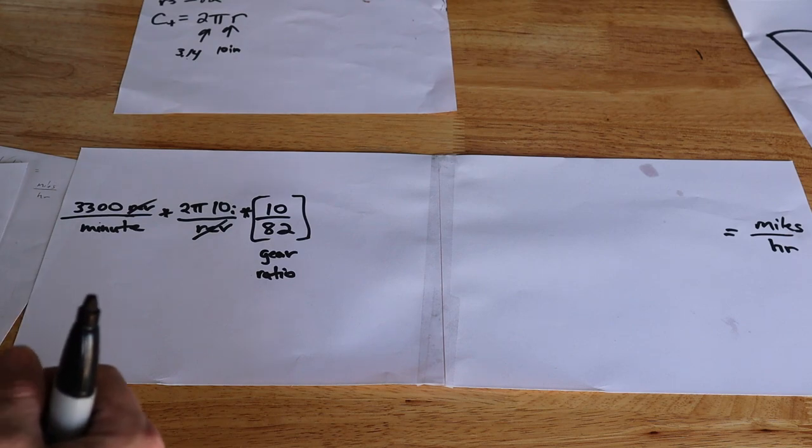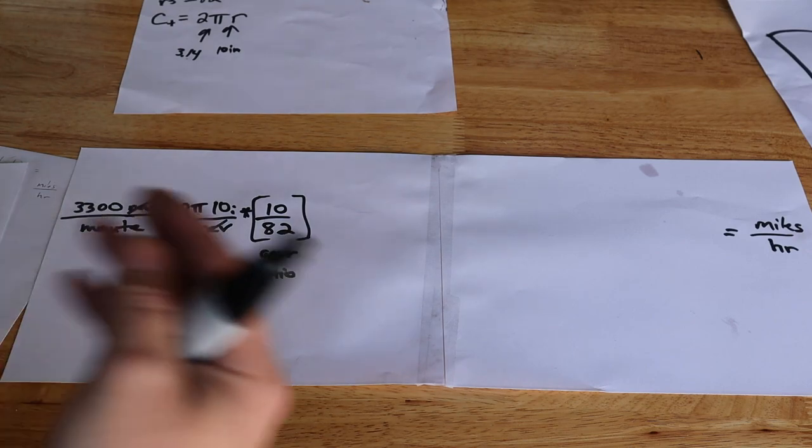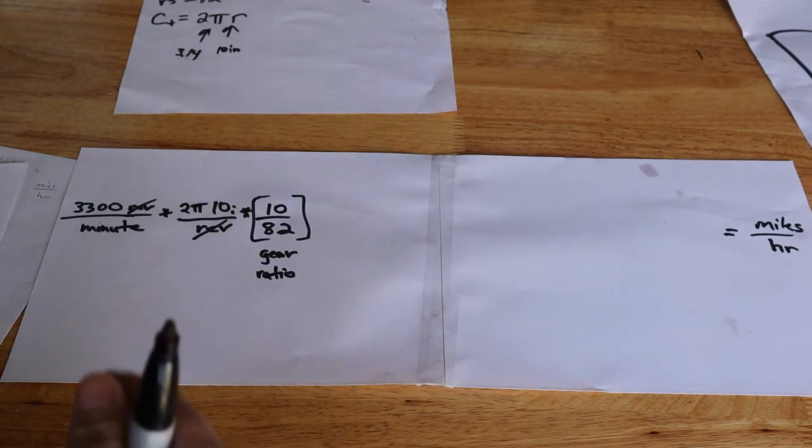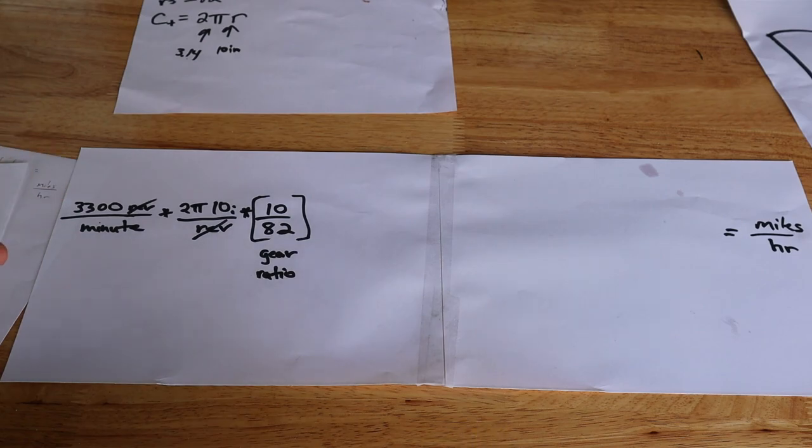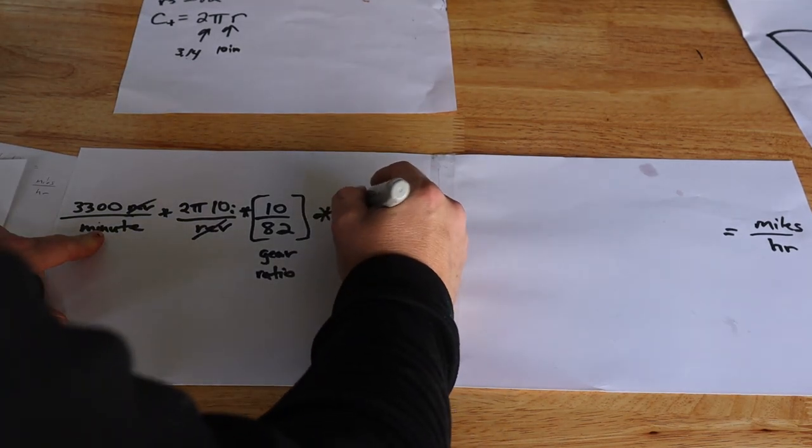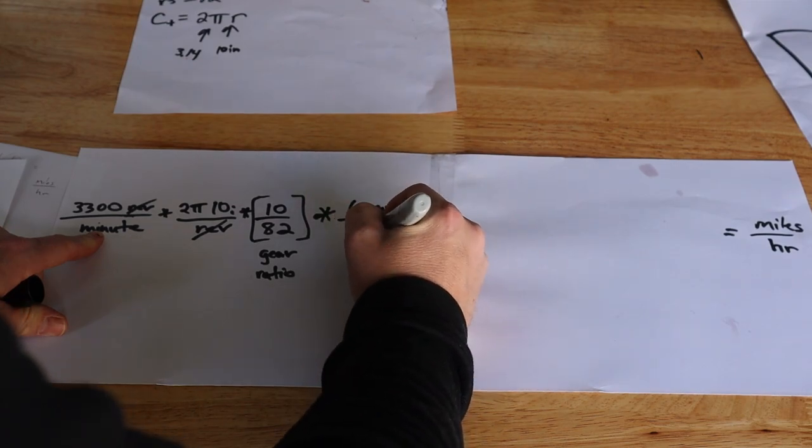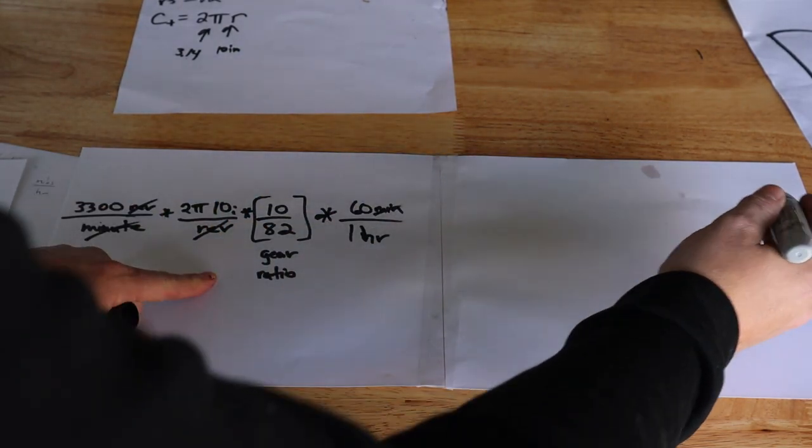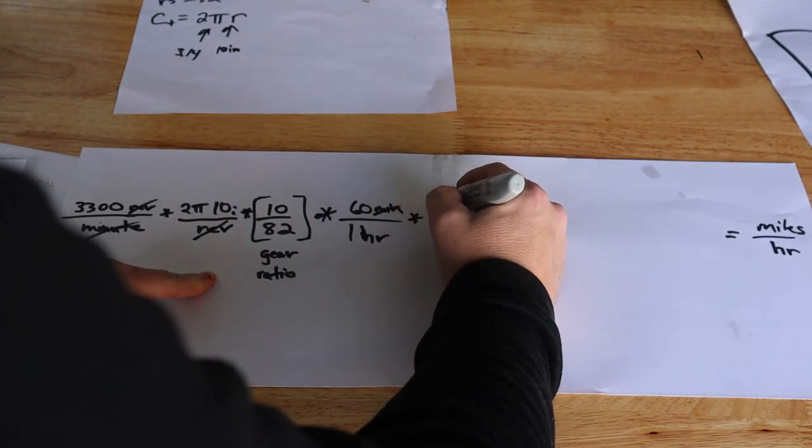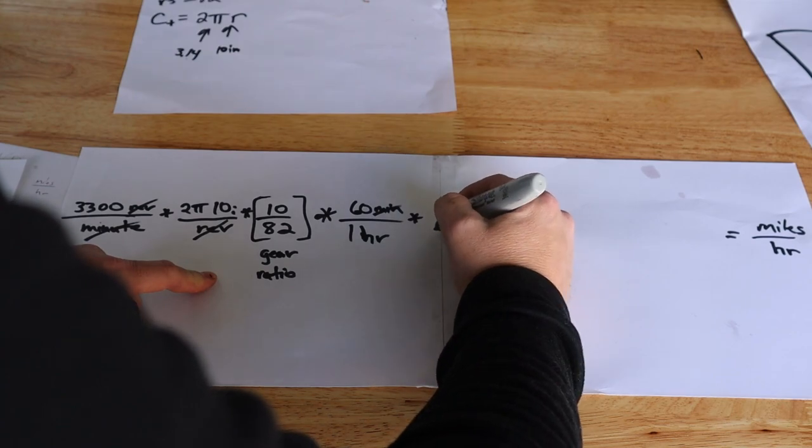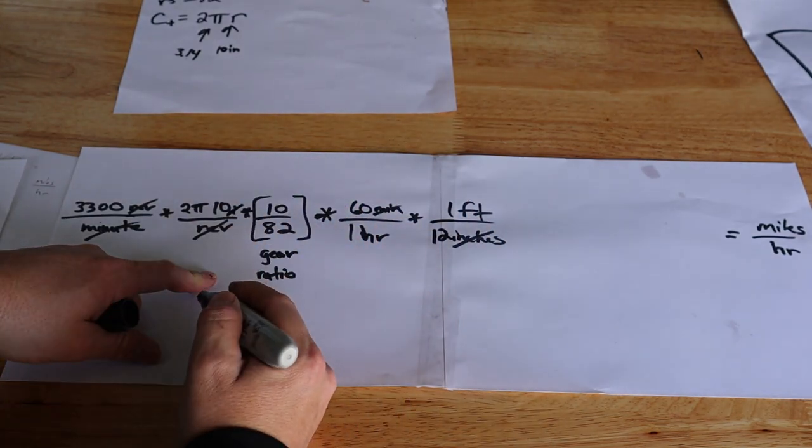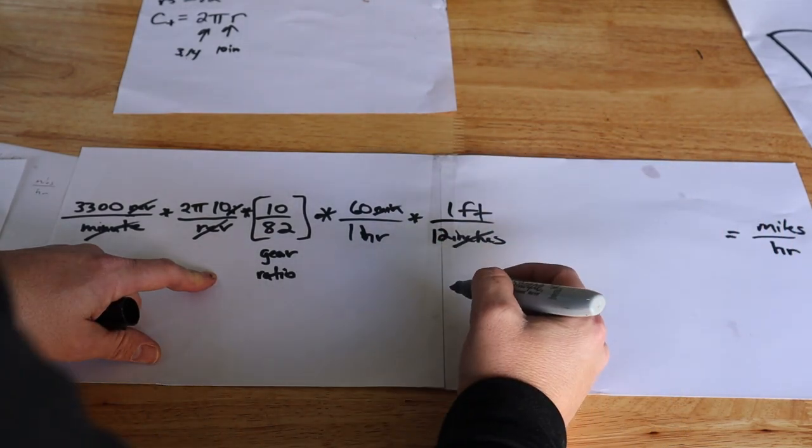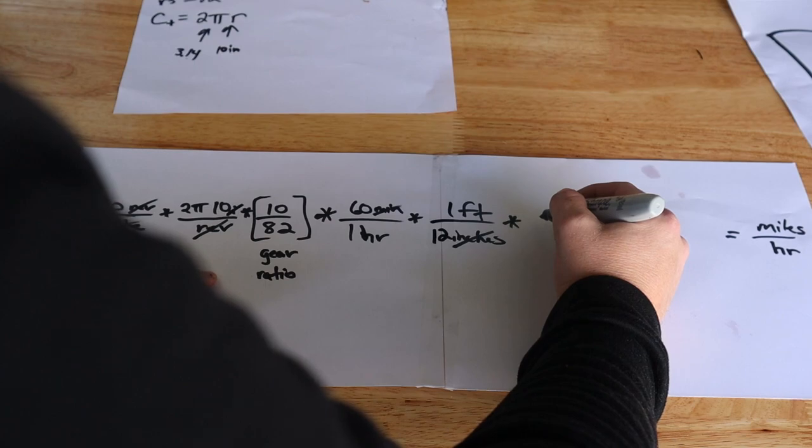We know there's 60 minutes in one hour, so we've already dimensionally got our hours on the bottom here, so we're canceling out our minutes. We're in inches here, so we want to get to miles. Let's do an inch to feet conversion: for every 12 inches there is one foot, so our inches cancel out with the inches in our circumference equation there. So now we're in feet per hour, and we want to get to miles per hour. For every 5280 feet there's one mile.